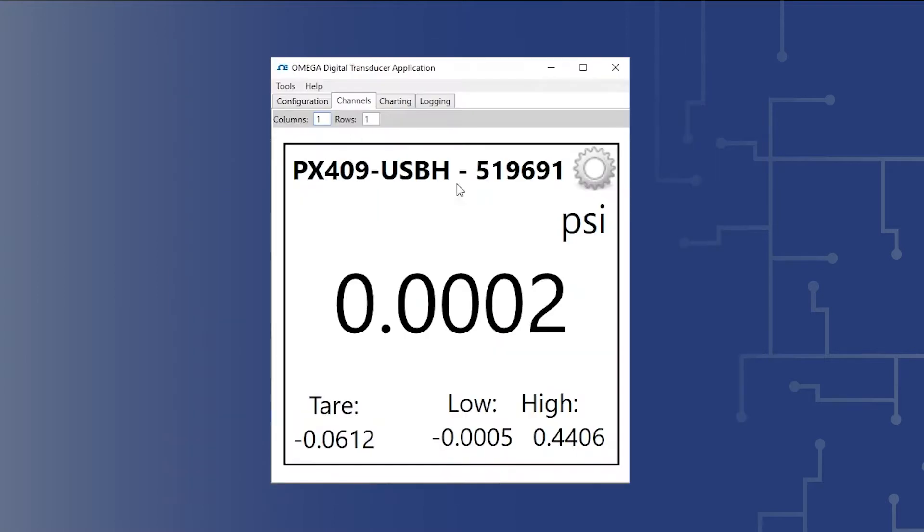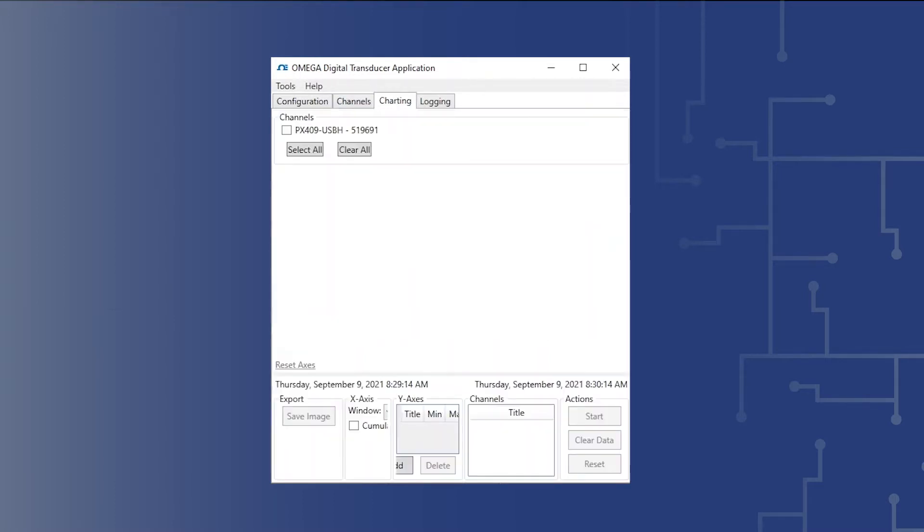2. Launch the Omega pressure transducer software of the NanoJet print system control computer. 3. Select the charting tab from the four selectable tabs on the top of the Omega software window.